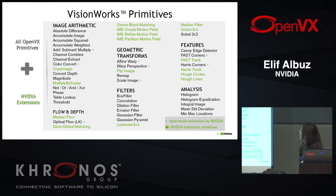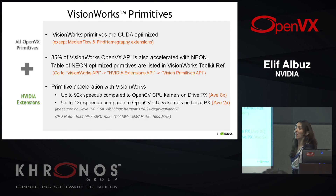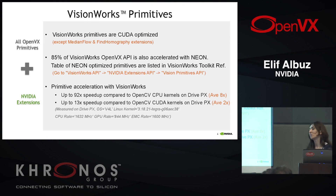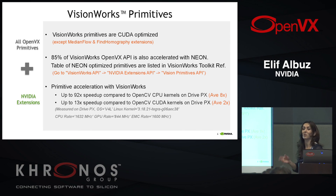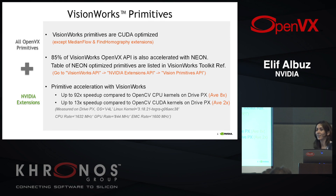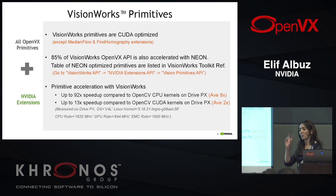We have different modes added in these primitives. Looking at our implementation, everything is GPU-optimized except medium flow and fine tomography, which are NVIDIA extensions. 85% of the VisionWorks OpenVX API is also optimized with NEON, so you have both GPU acceleration and NEON. By setting which target hardware to run on, you can run on the CPU with NEON optimization or on the GPU, and it will seamlessly transfer the data and control it for you. You can check our documentation to identify which functions are accelerated on which platform and construct your pipelines accordingly.